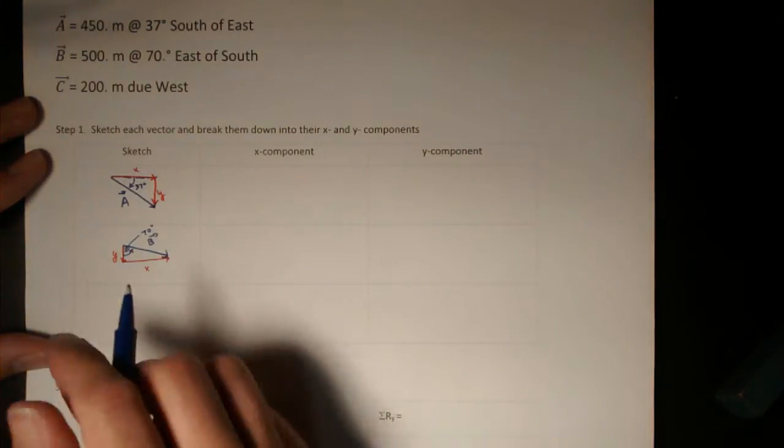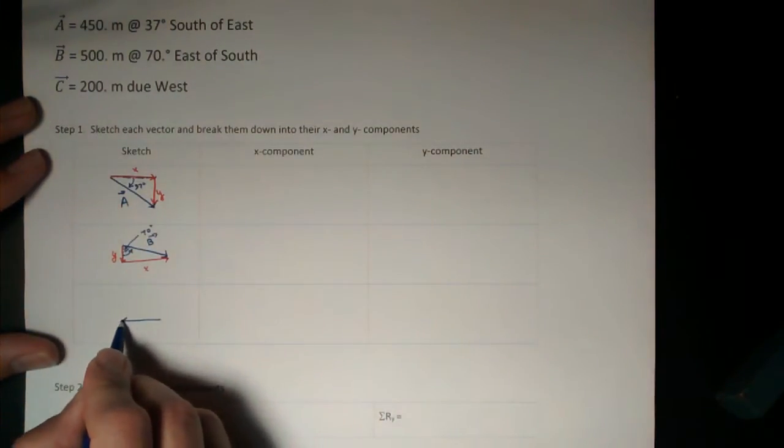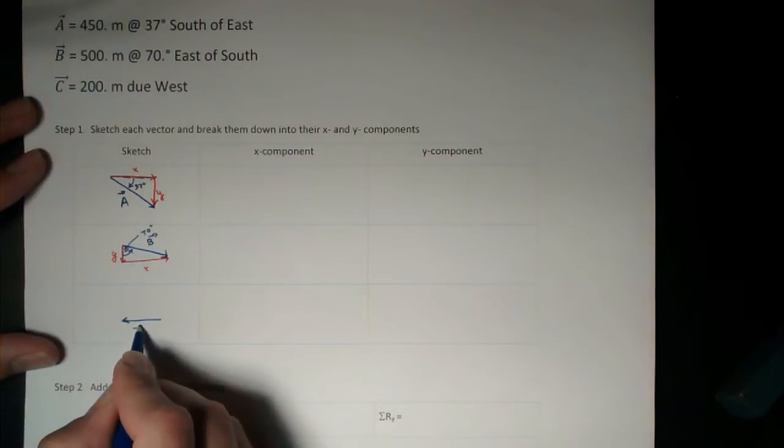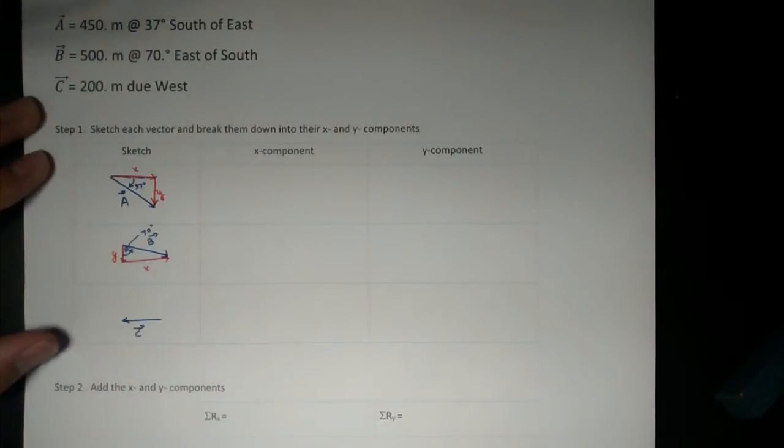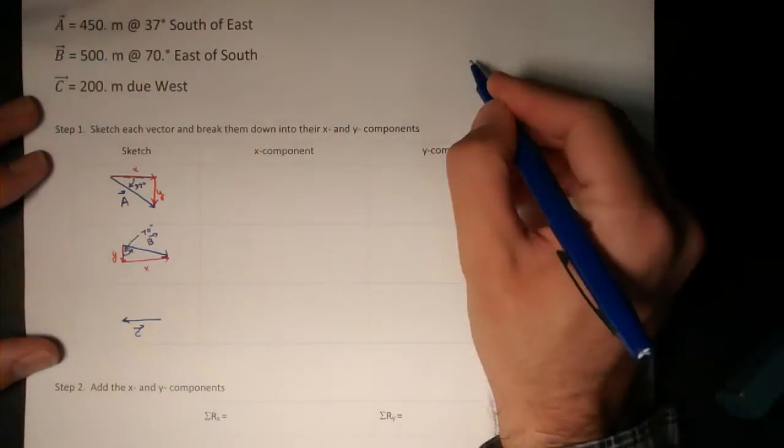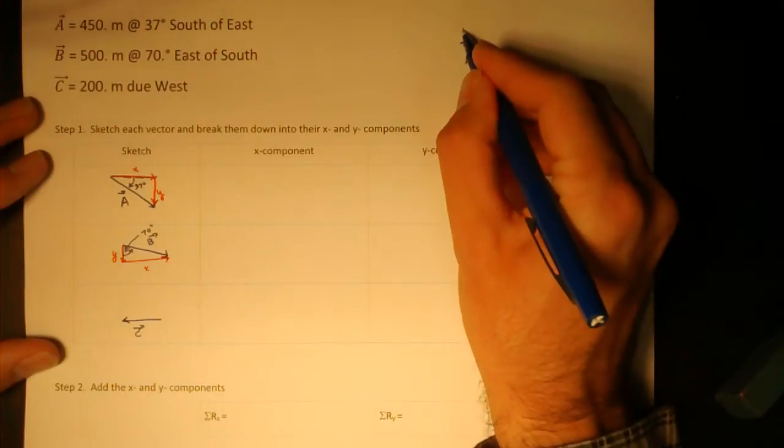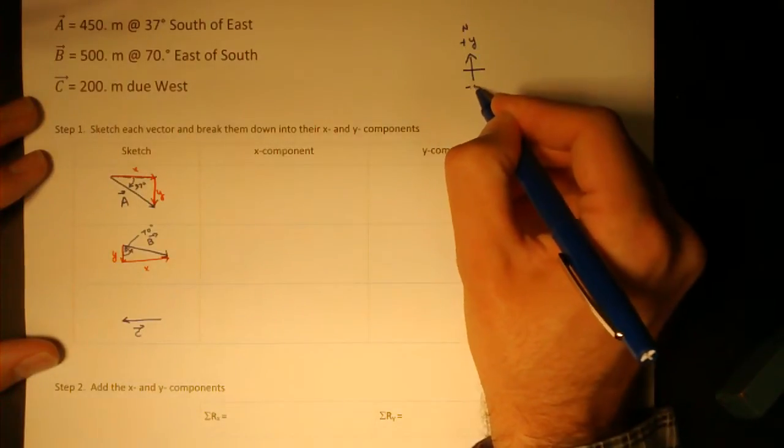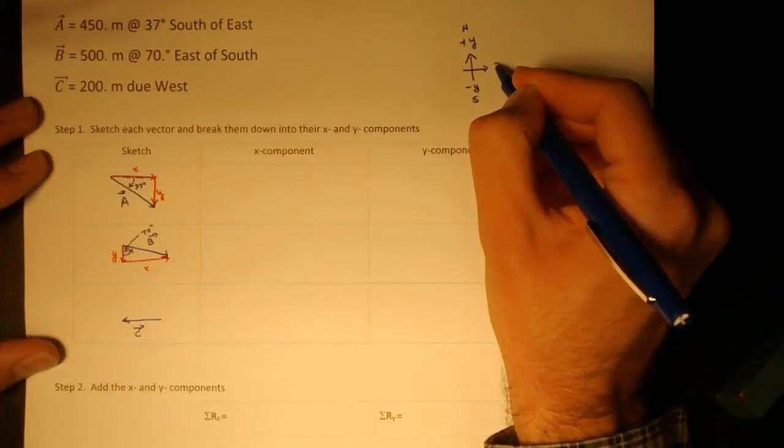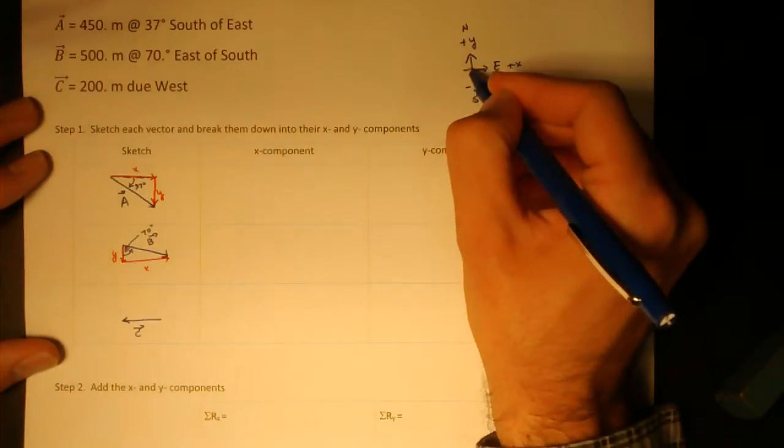Vector c is 200 meters west, and so it can't really be broken down into components because it only points in the negative x direction. Remember, we're considering north to be the positive y direction. And we're considering east to be the positive x direction.